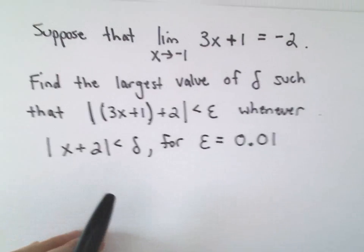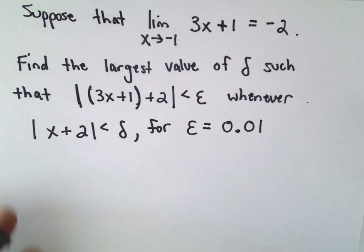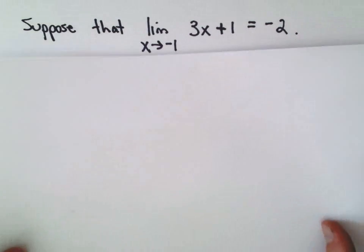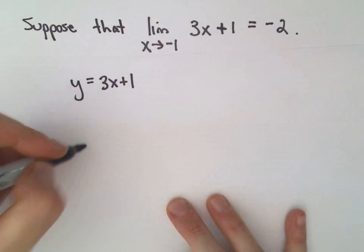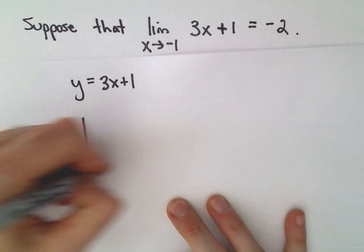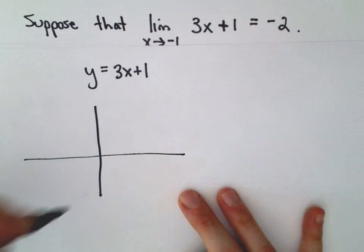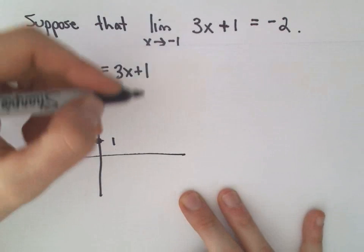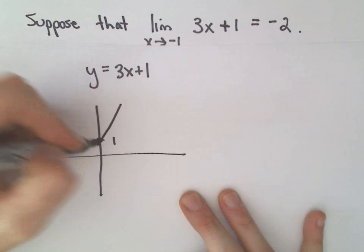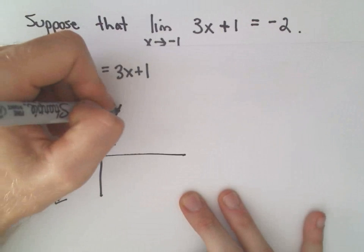So again, that looks kind of confusing, I think, maybe at first. But again, this is all that we're saying. So let's graph the function y equals 3x plus 1. Well, y equals 3x plus 1, that's just a line that has a y-intercept of positive 1, and then has a slope of positive 3. So it would look something like that.